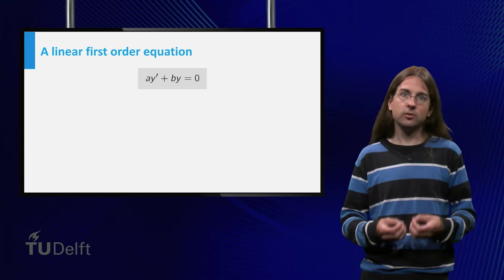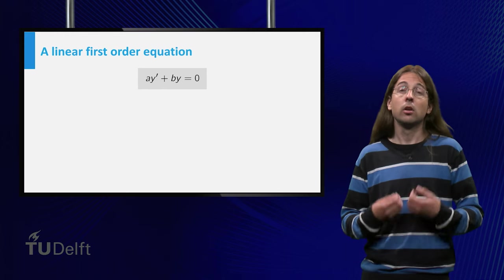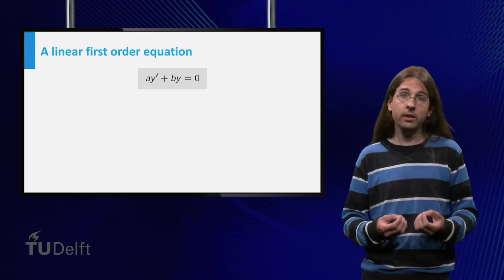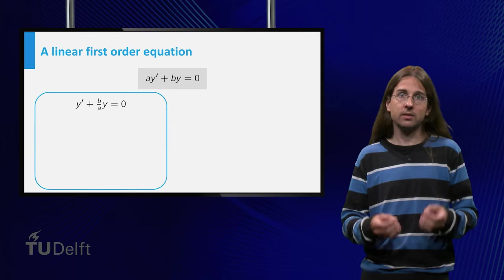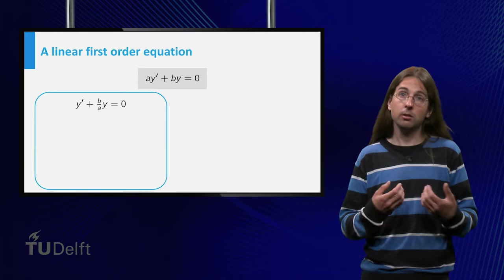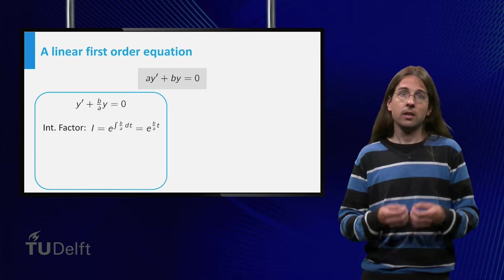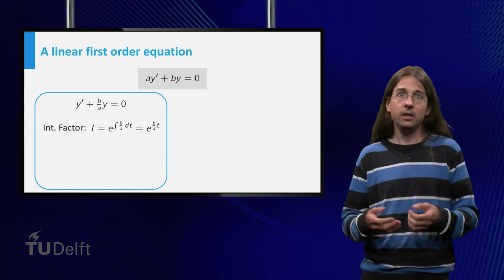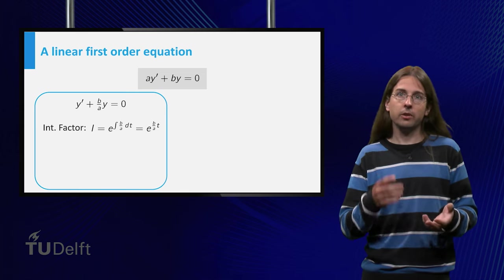This equation is both separable and linear, so we know how to solve it. Solving it as a linear equation, we will try to find the integrating factor. Dividing by a, we obtain y prime plus b over a times y equals zero, so the integrating factor is e to the power of the integral of b over a dt, which is just e to the power b over a times t.